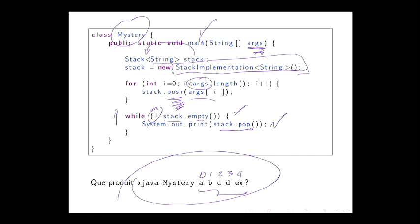J'exécute ce programme-là. Qu'est-ce que vous voyez à l'écran ? E-D-C-B-A. Donc, on a renversé l'ordre des éléments — c'est ce qu'une pile fait, tout simplement.